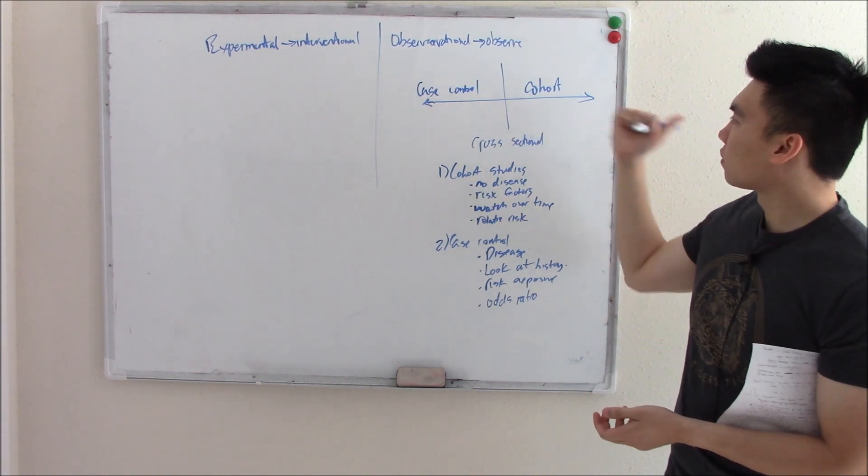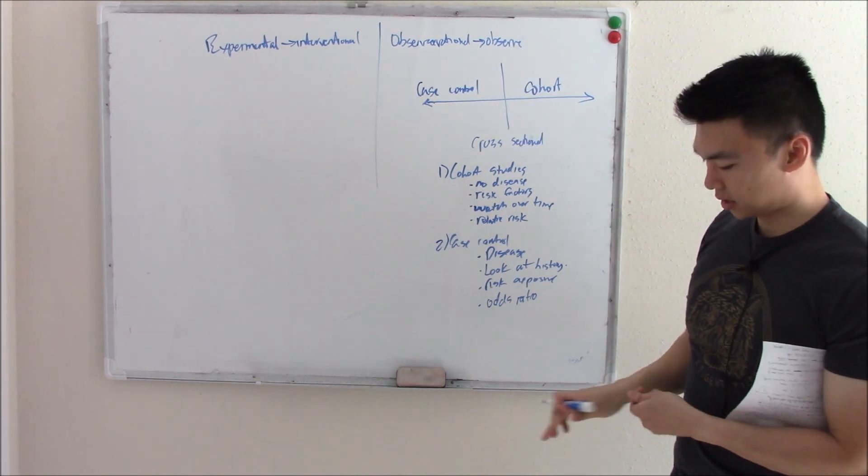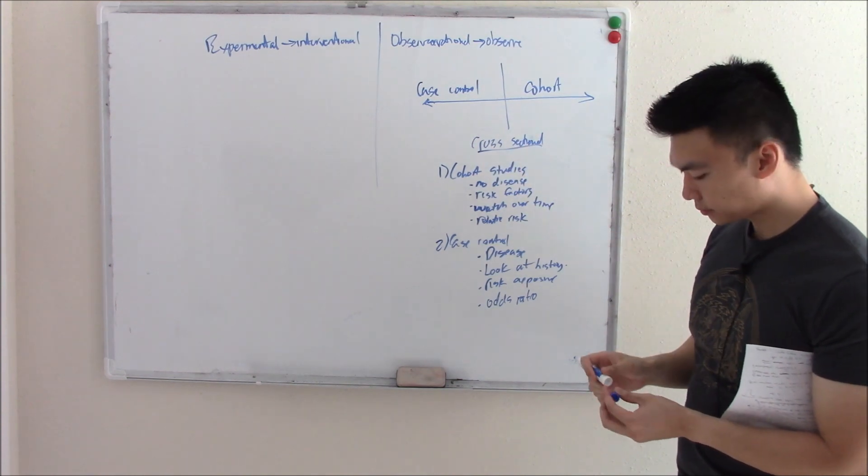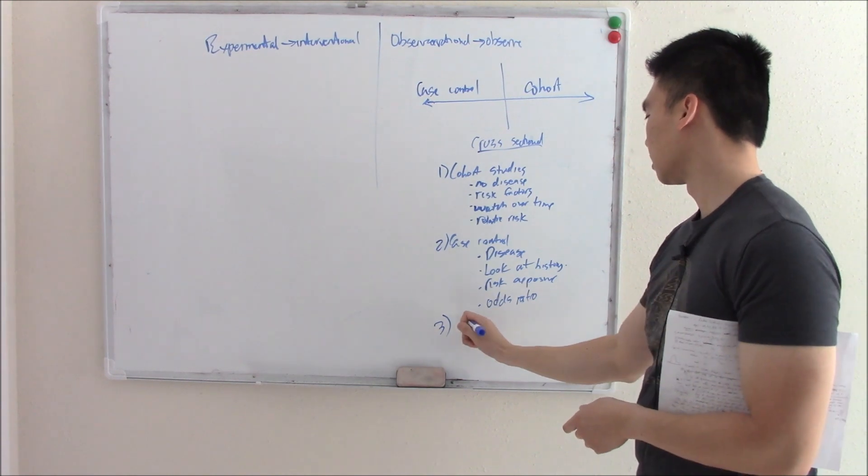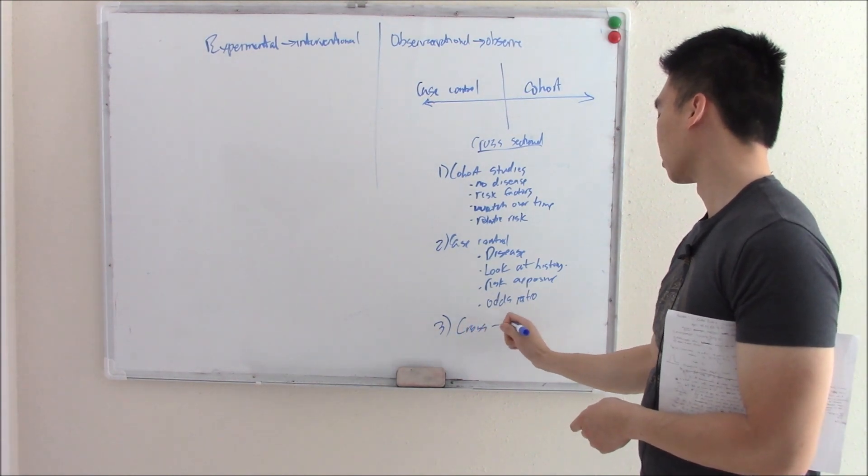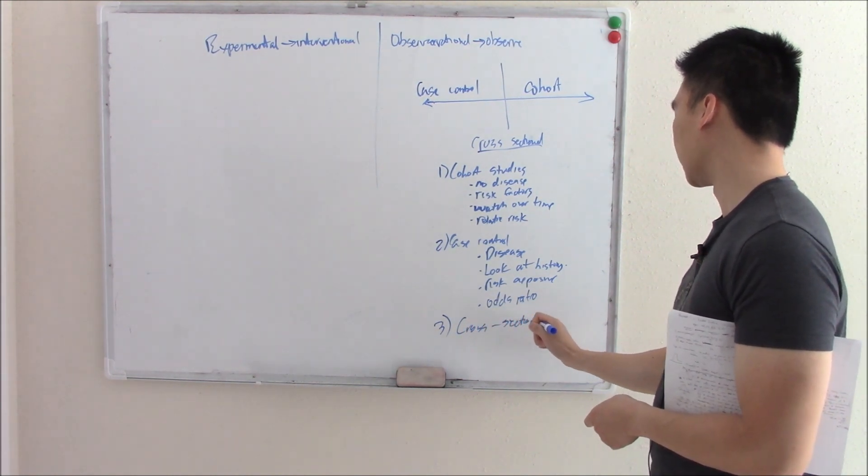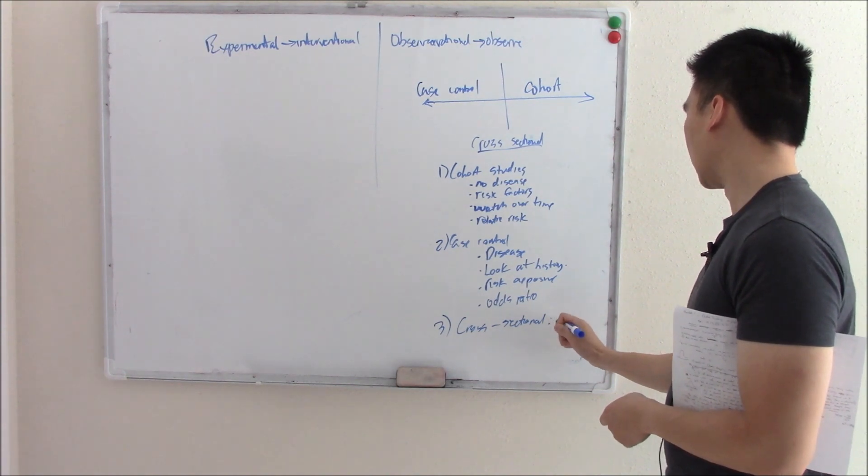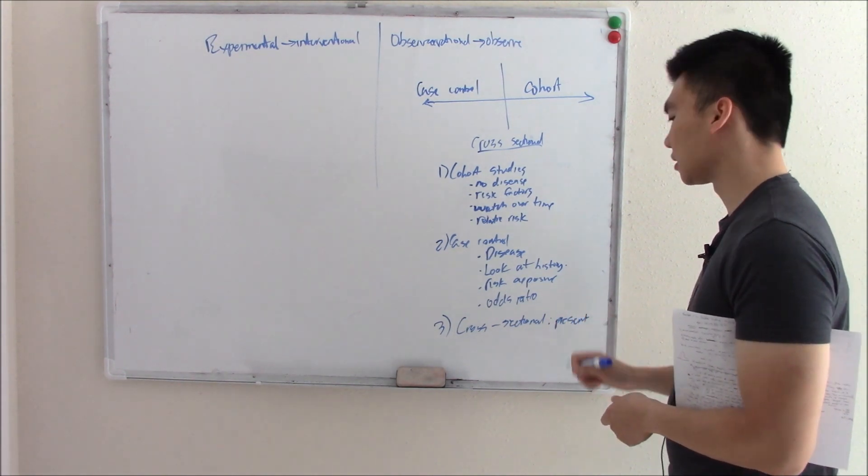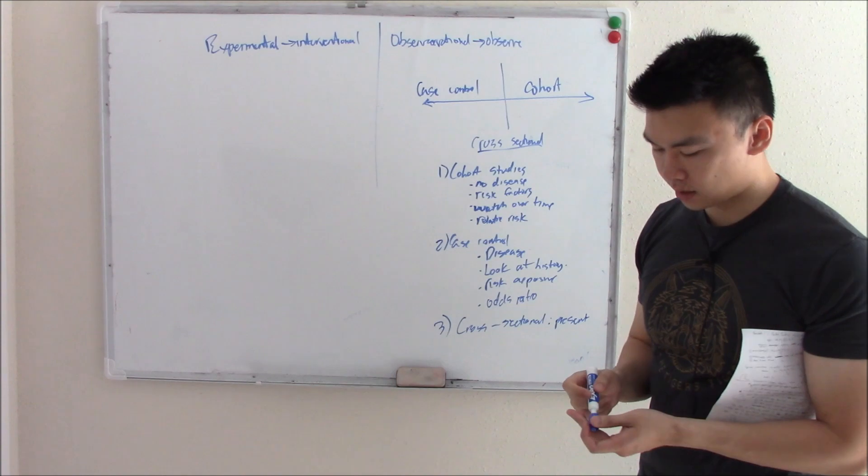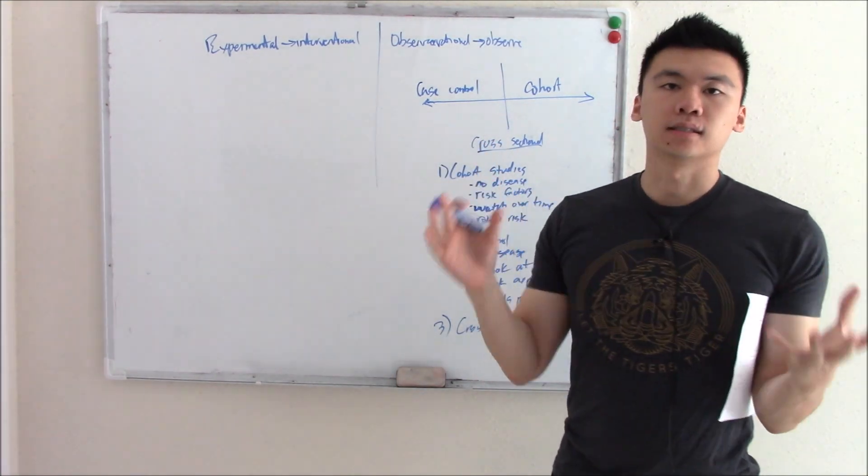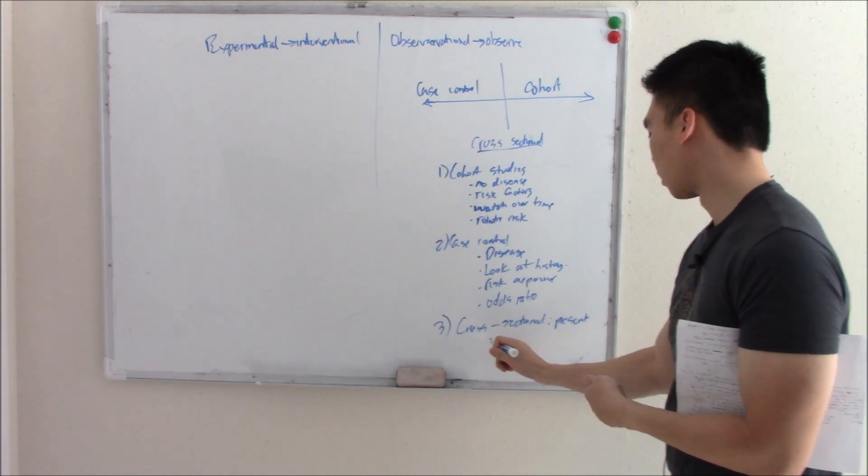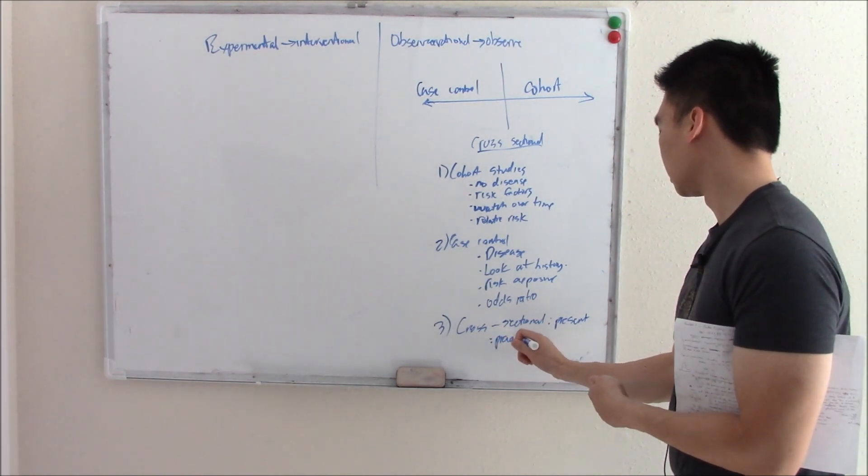So we have one looking forward, one looking back. What is cross-sectional studies? Cross-sectional studies looks at the present. Cross-sectional looks at the present day. It takes a snapshot of what is occurring right then and there and kind of sees who has this disease. It looks for the prevalence of the disease.